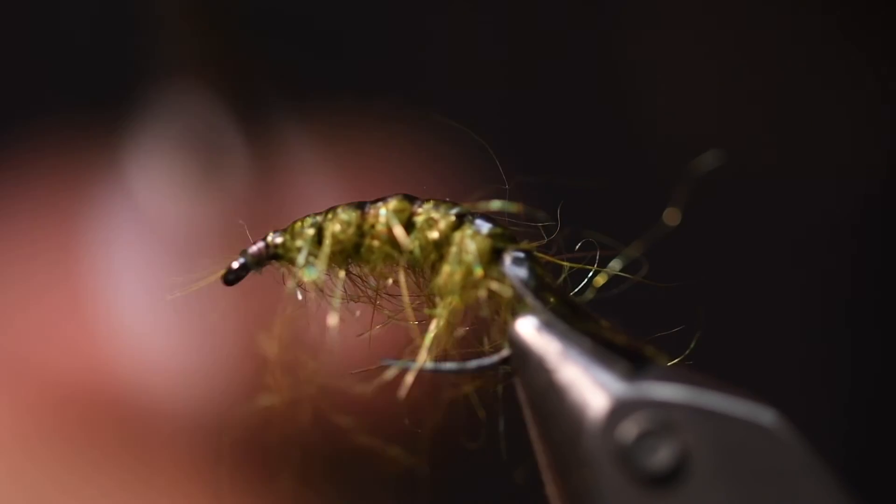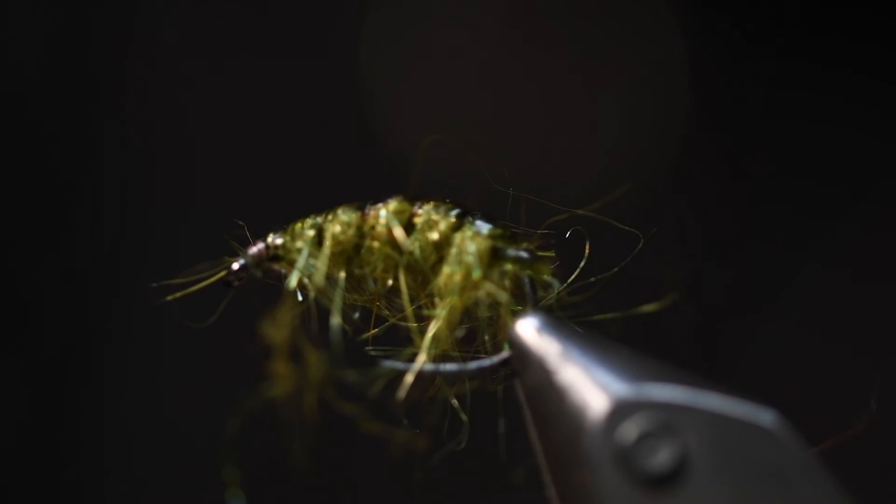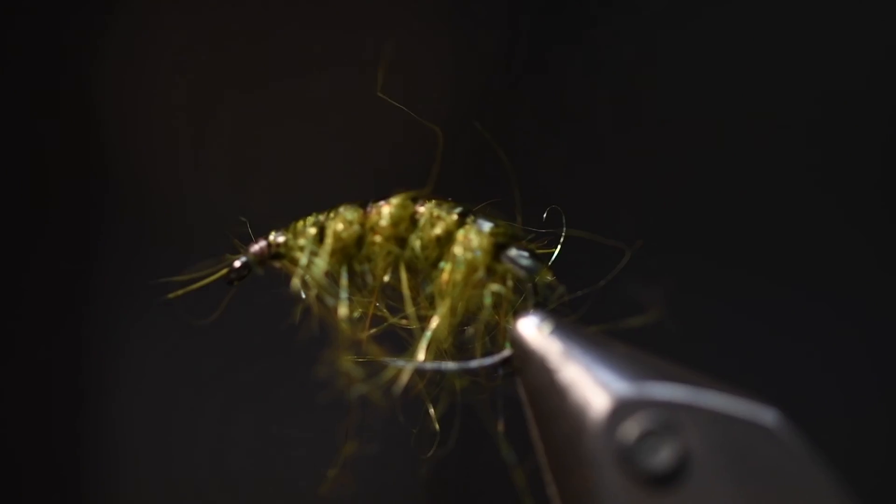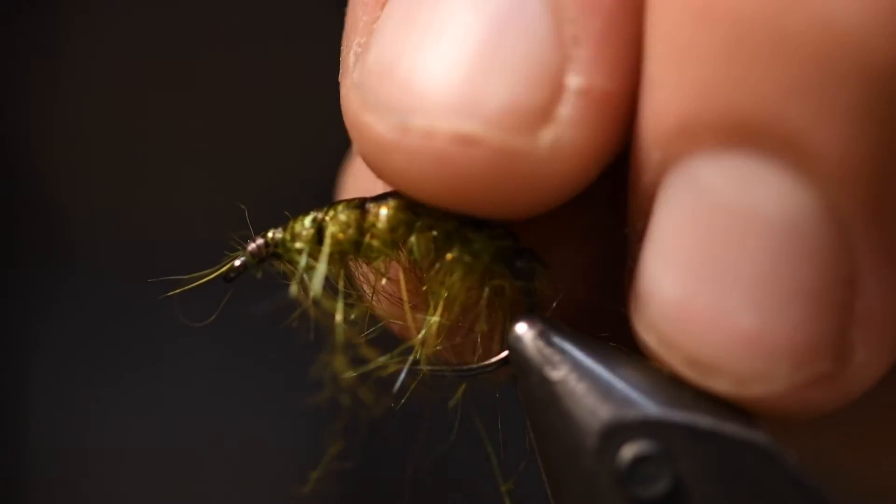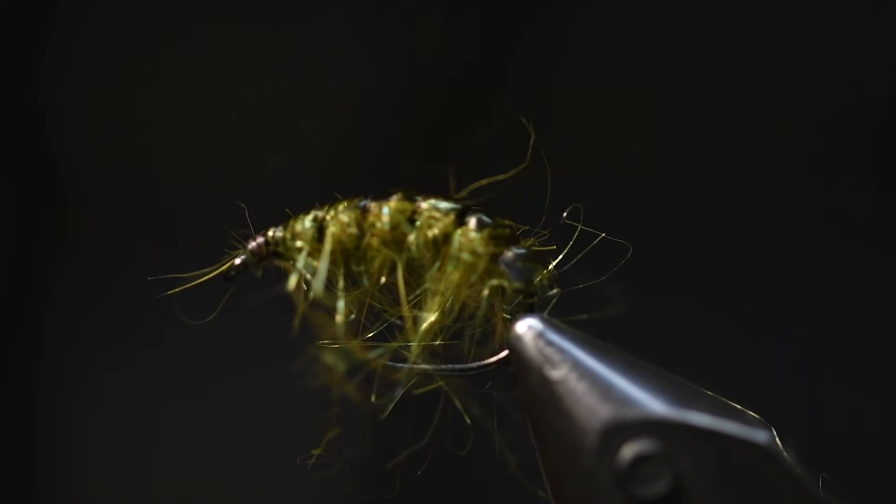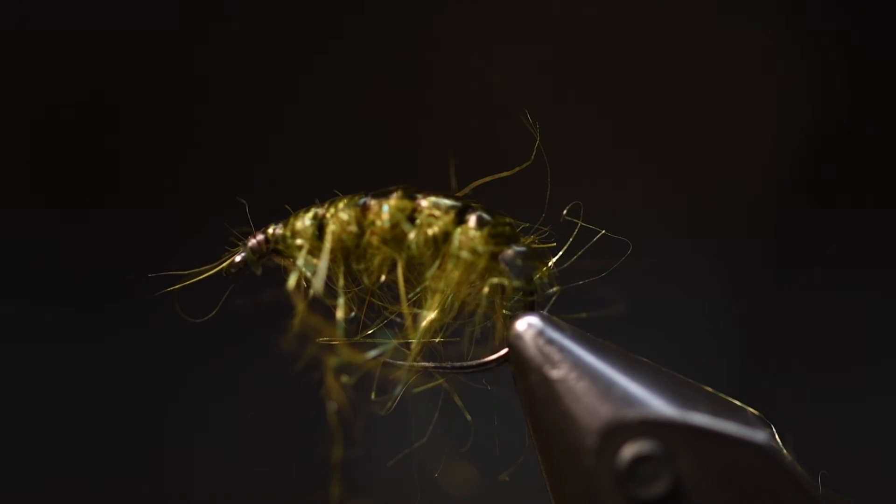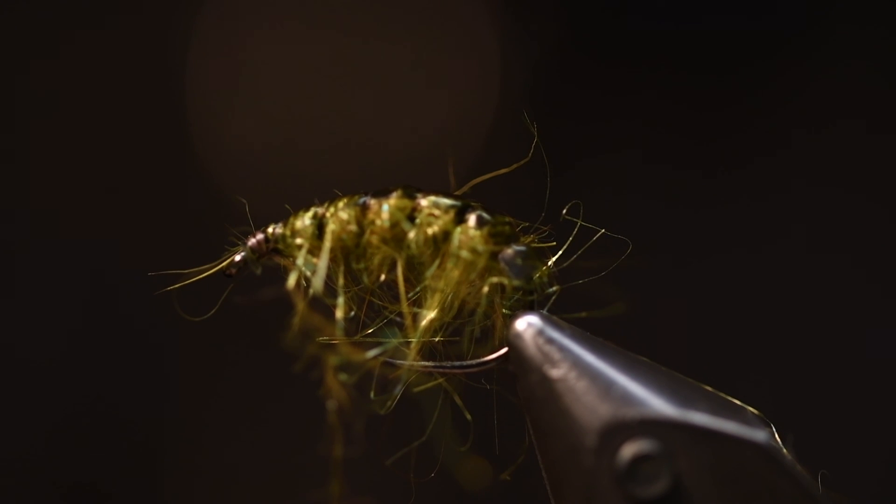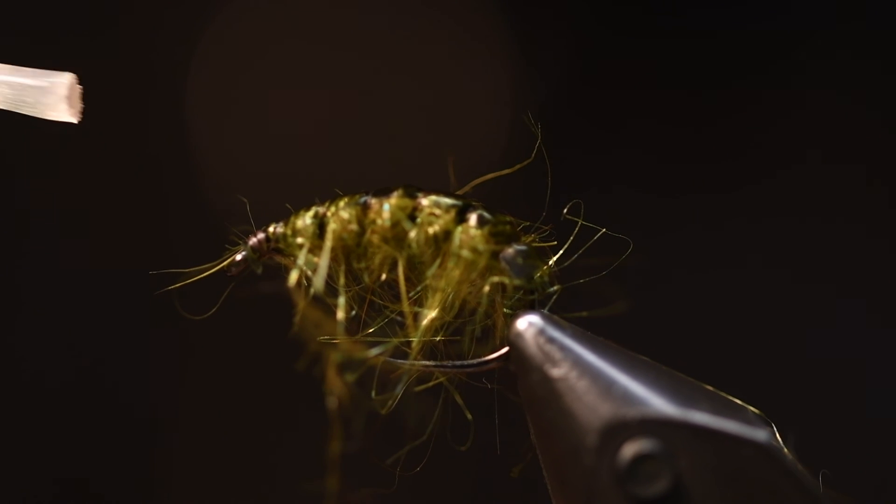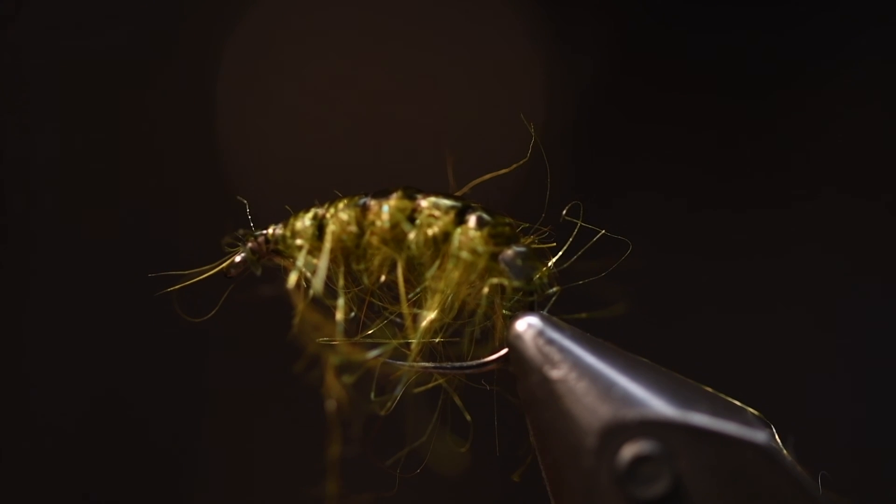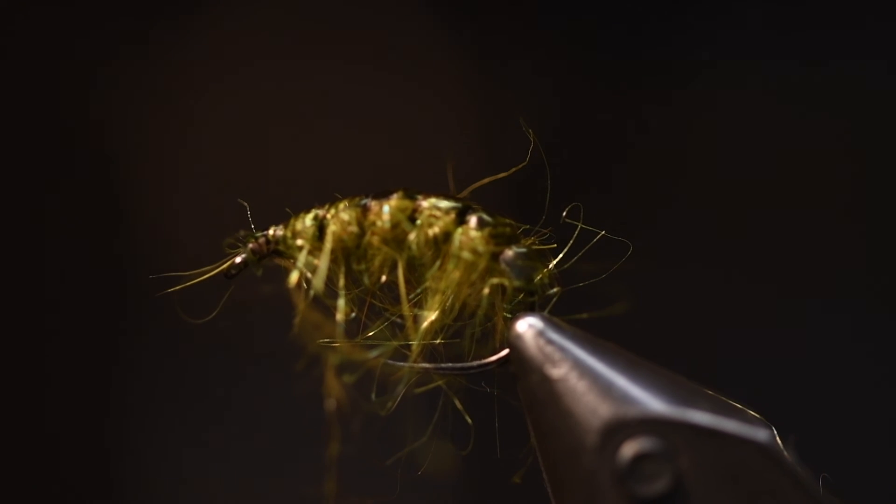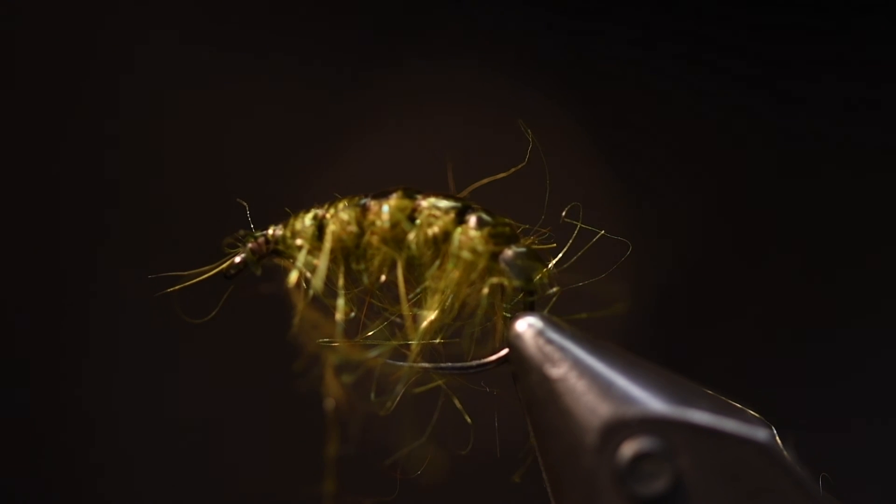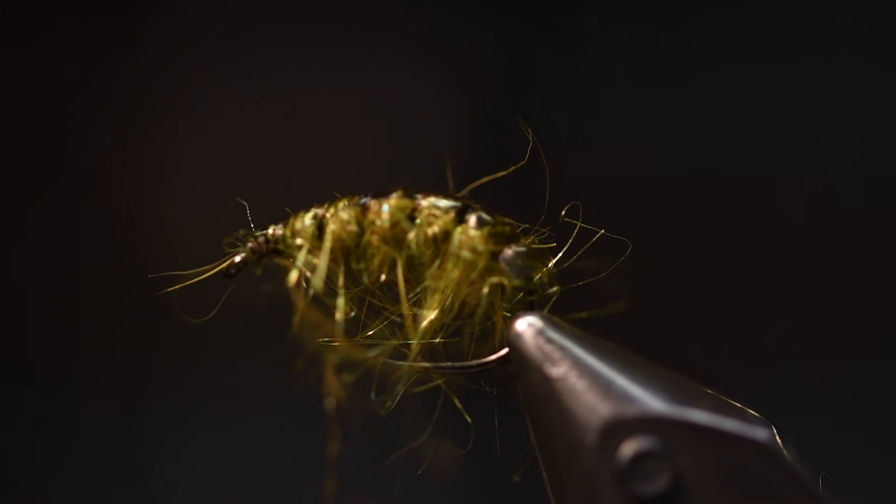And then of course we will cut this off here. So there it is. This is a perfect caddis imitation. You can also just put a little drop of superglue there. It's quite simple and it fishes perfect. So tie up a few and fish them as both gammarus and caddis flies. Thanks.